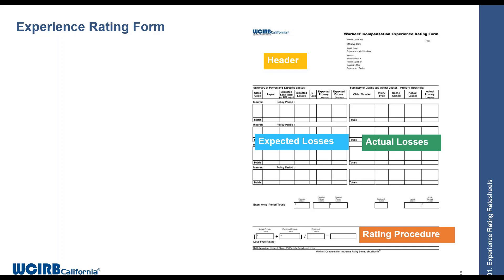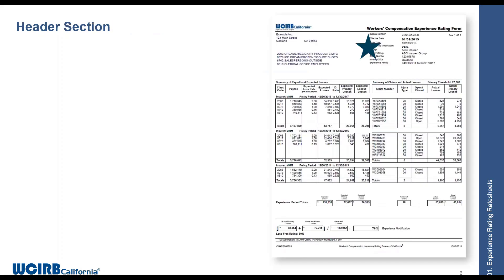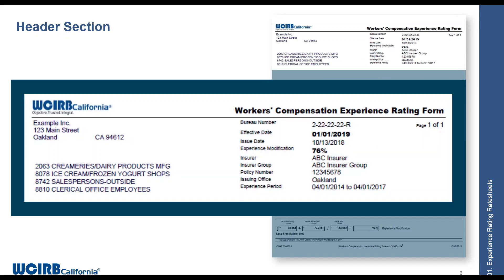Now let's go over the four sections of a rate sheet, the first of which is the header. Each rate sheet is released to a specific carrier covering a specific policy. On the top left is the policyholder information — the mailing address, the primary name on the policy, and a couple of additional entity names. On the lower left, you'll see the bureau-assigned class codes from an inspection report. If the risk hasn't undergone an inspection, there won't be any assigned class codes.